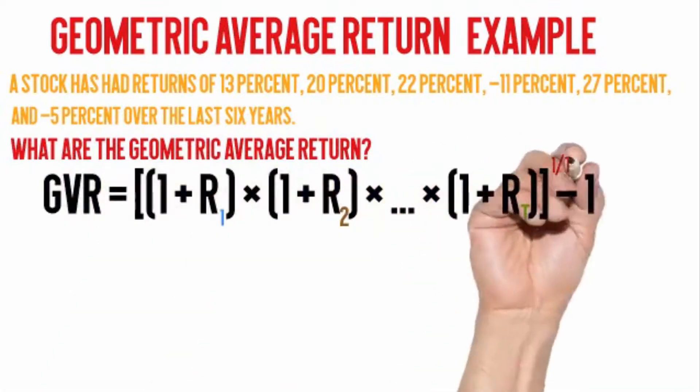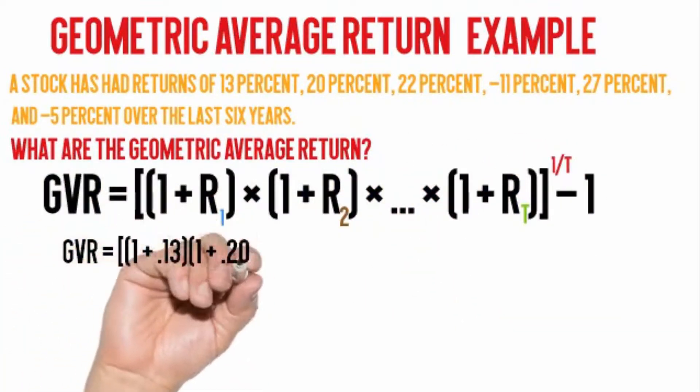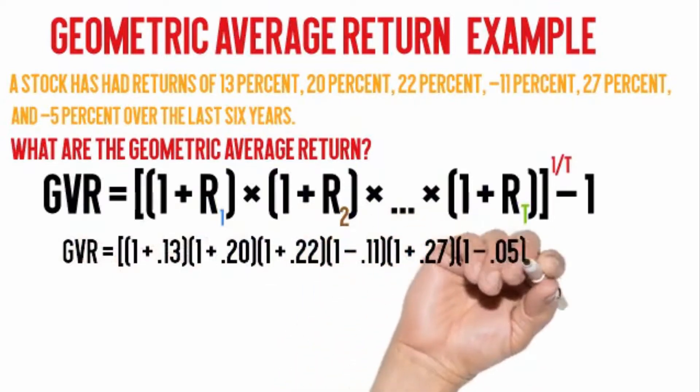Step 1: take each of the 6 stock annual returns, converting them to decimals and add one to each stock.